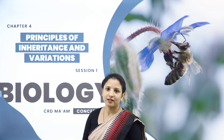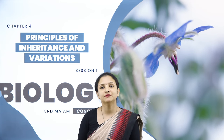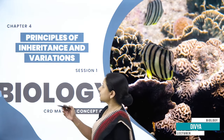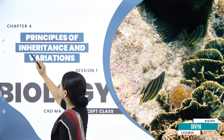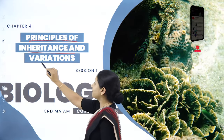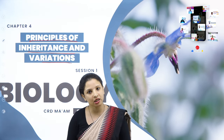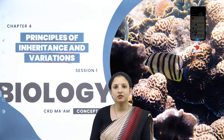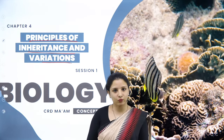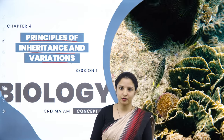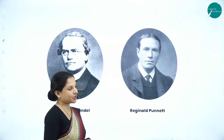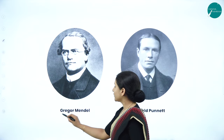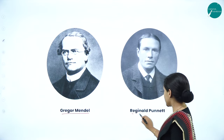Hello everyone, a warm welcome to this session of concept class for class 12 biology. I am Dr. Divya, biology faculty. In this session for chapter 4, principles of inheritance and variation, we'll talk about Mendelian inheritance — specifically Mendelian inheritance of one gene, that is monohybrid cross. Before starting, we need to remember two scientists: Gregor Mendel and Reginald Punnett.